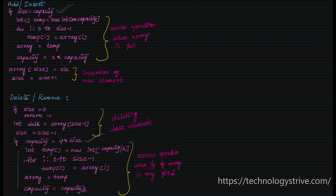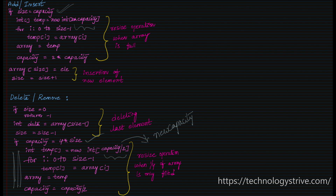After the if-condition, the entire code is the same — we just change the new capacity. For add it's two times capacity; for delete it becomes capacity divided by two. We can consider this as a variable called new capacity, and we'll write this piece of code in one separate method and call that same method in both add and delete.